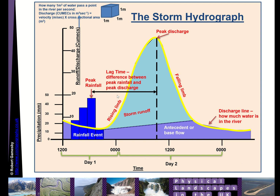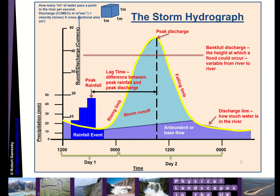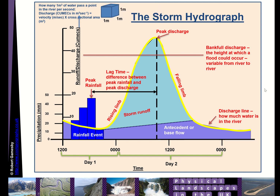There are eight features marked on the hydrograph. The rising limb is the river level going upwards, and then we have the falling limb — the river level going down. The steeper the rising limb, the more flashy the river and the more likely it is to flood. The last thing marked is the bankfall discharge: once the discharge goes above that level, the river will flood into its surrounding areas.